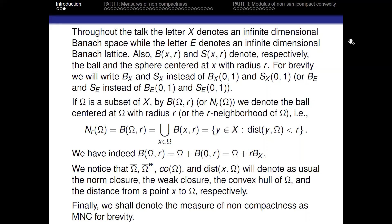If Ω is a subset of X, then B(Ω, R) will denote the ball centered at Ω with radius R — in other words, the R-neighborhood of Ω — defined as the union of all balls B(x, R). We already know that B(Ω, R) can be written as Ω plus R times B_X. The norm closure, weak closure, convex hull, and distance from a point to the set will be denoted as usual. Finally, we shall denote the measure of non-compactness as MNC for brevity.